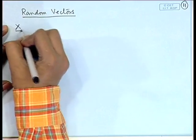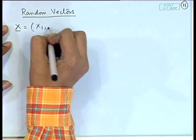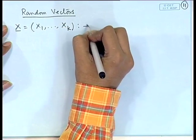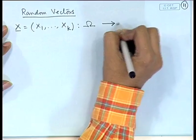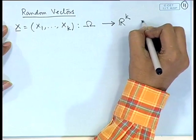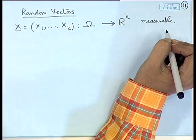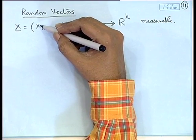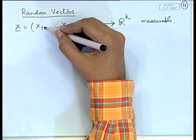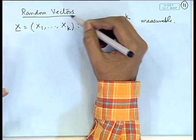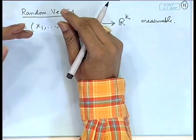So X = (X_1, X_2, ..., X_k) is a k-dimensional random vector, defined to be a measurable function from Omega into R^k. You may have some of the random variables X_i as discrete, some as continuous, and some as mixtures. All types of possibilities for the type of the random variables are available.